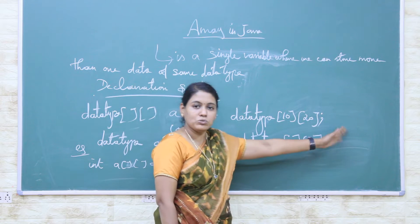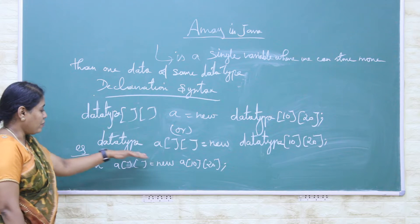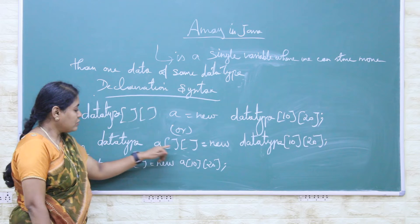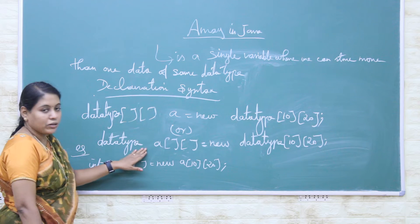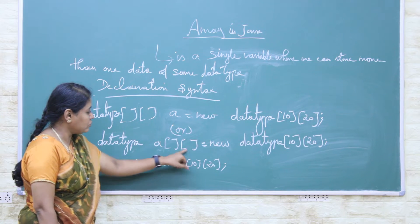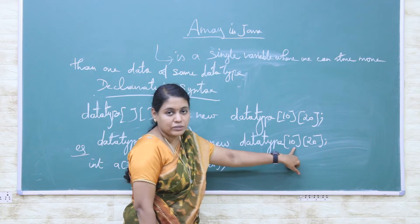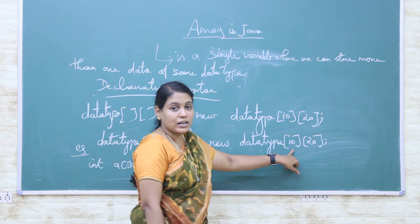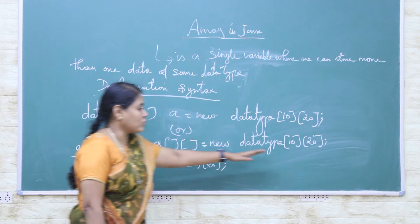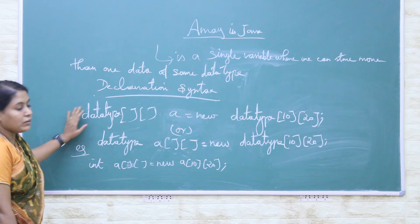We may also use more than two subscripts because it is a multi-dimensional array. We may also define the declaration in a different format — data type, then the variable name 'A', followed by two subscripts placed after the variable. This is equivalent to the first format: the data type, then the subscripts indicating how many data items are stored row-wise and column-wise. Both declaration forms end with a semicolon.